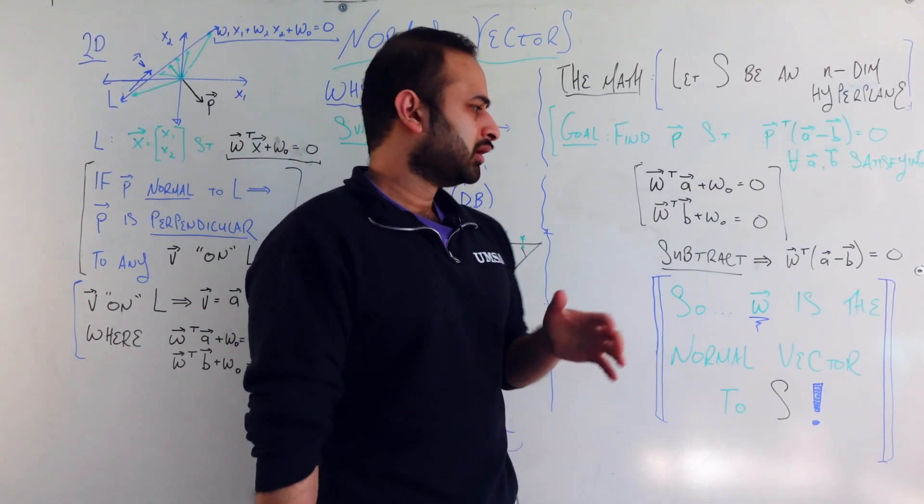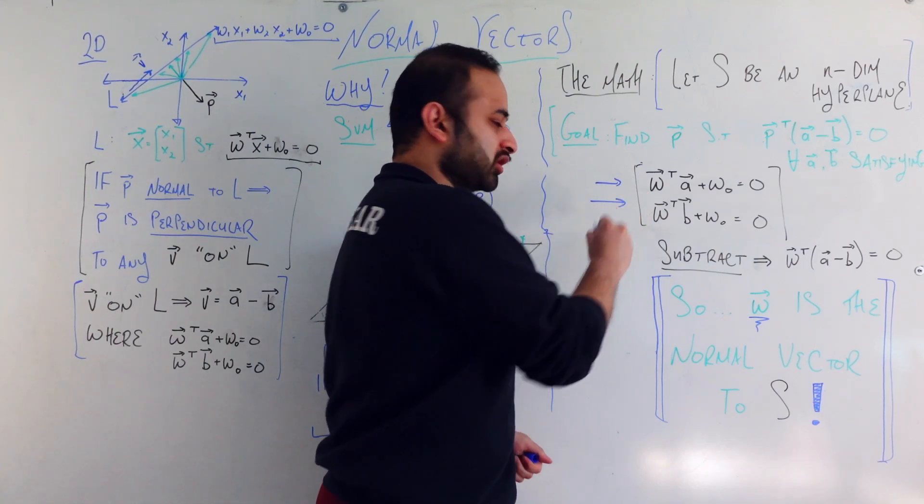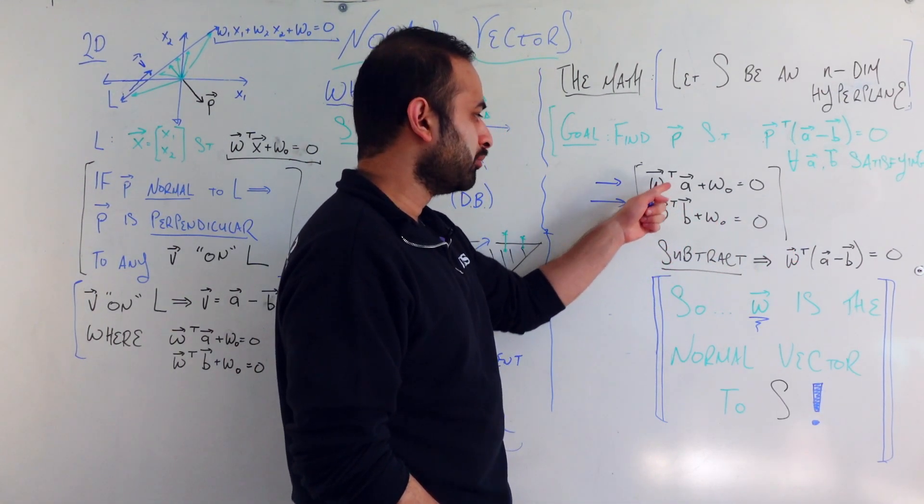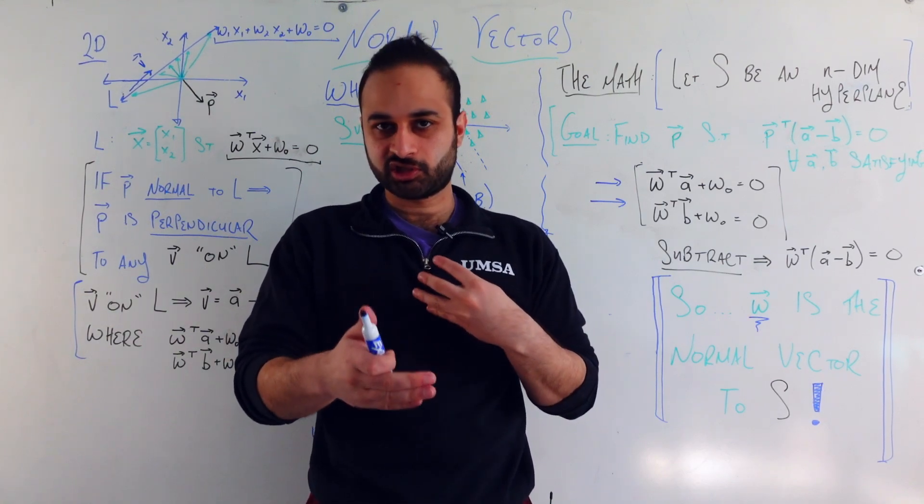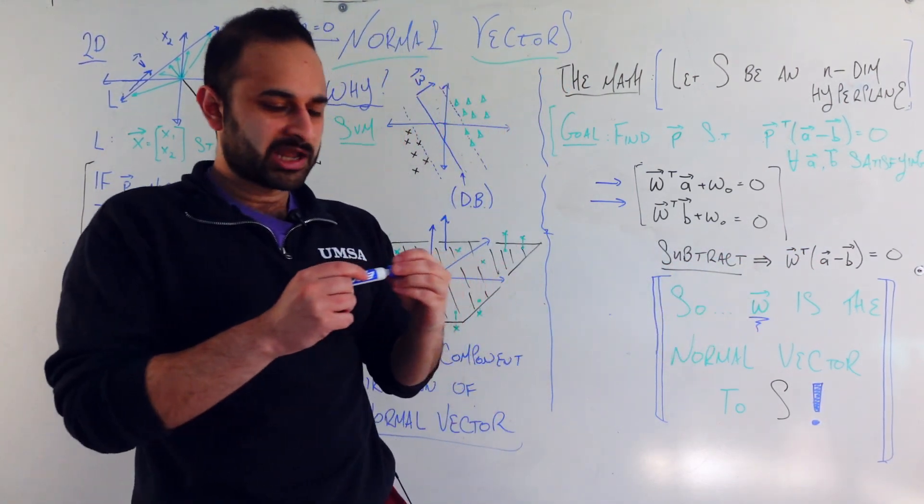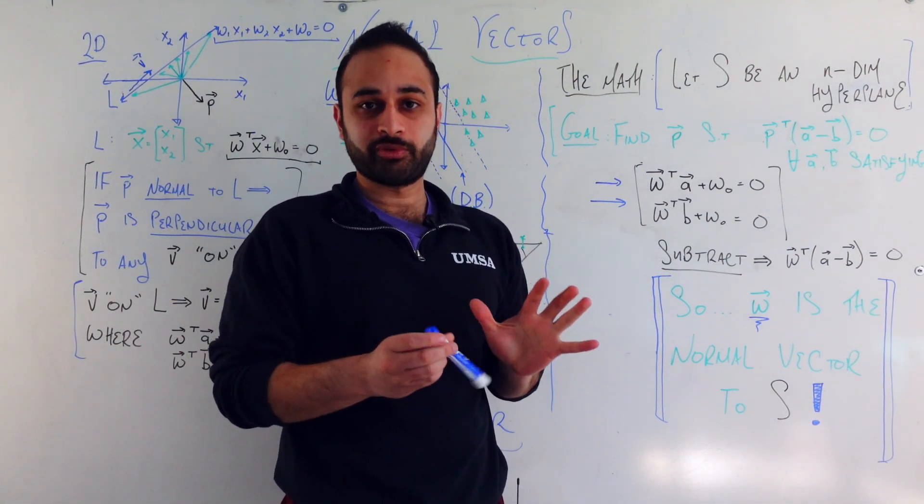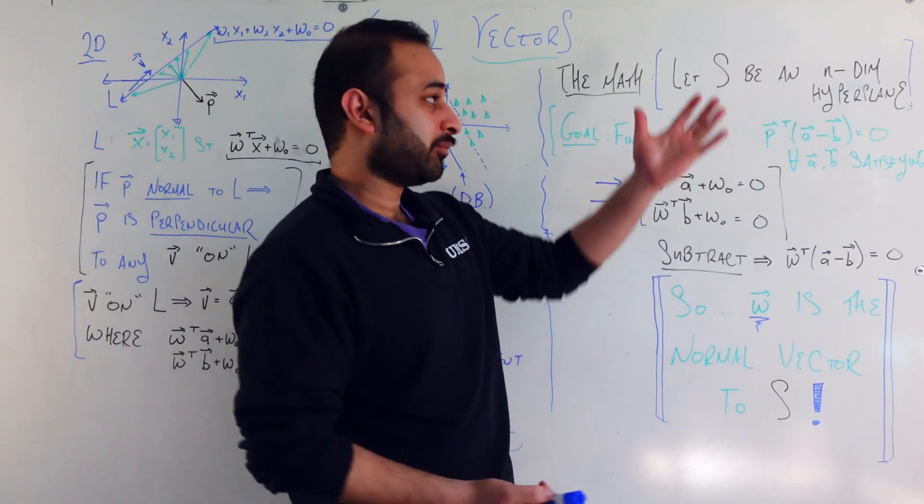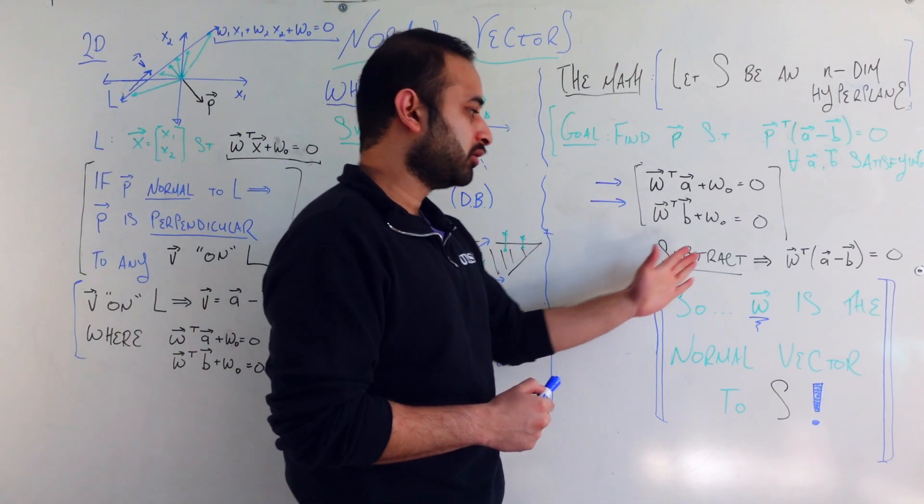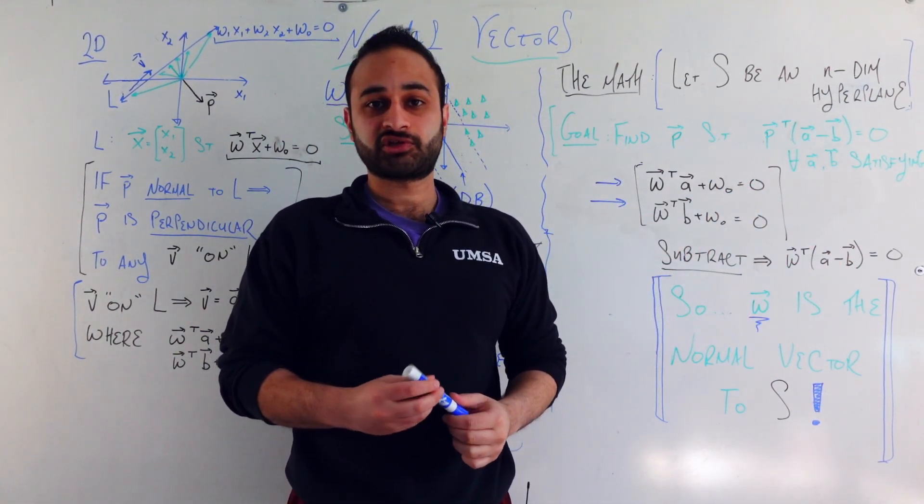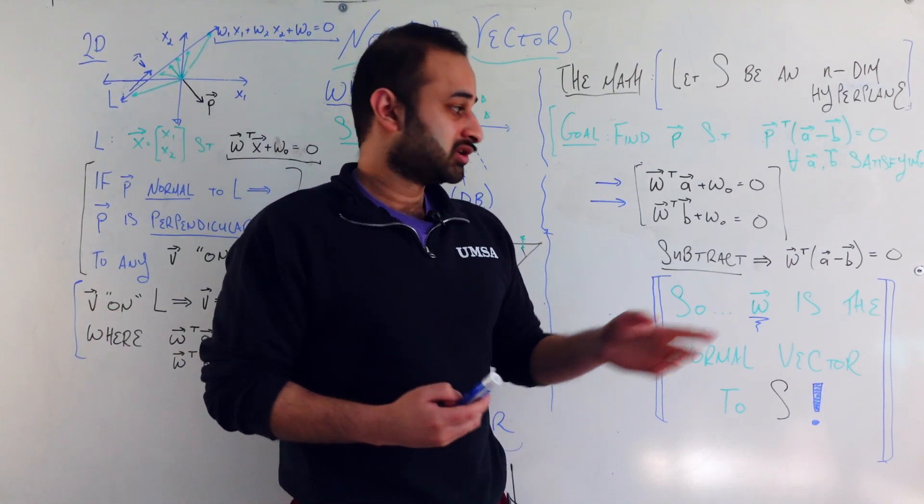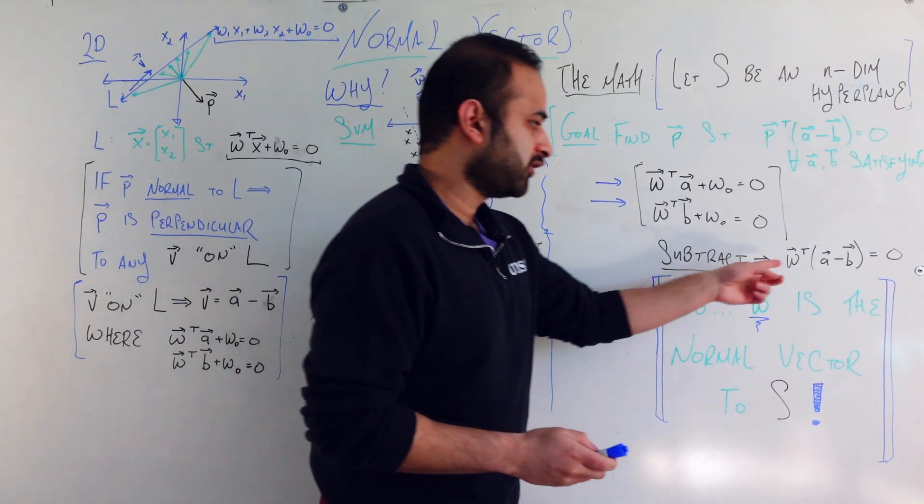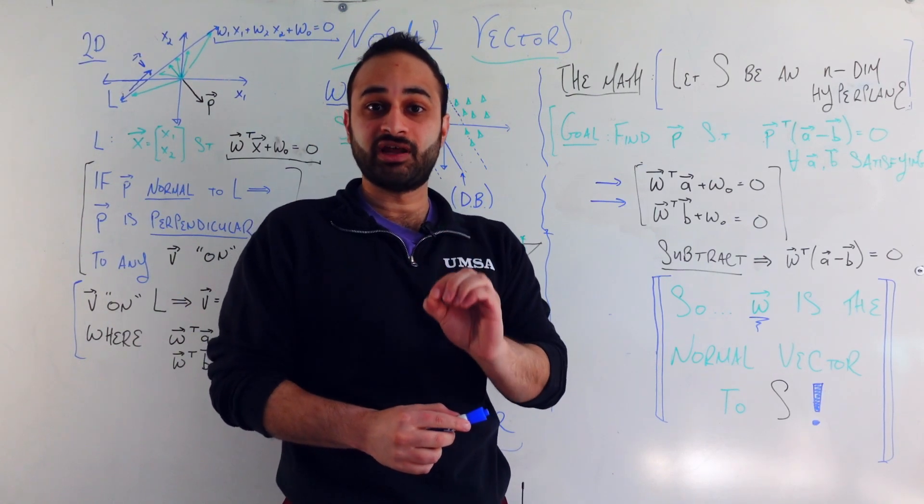Let's do a very natural thing. Let's subtract this equation from this equation, or the other way around. It doesn't really matter. So if we subtract these two equations, we're going to get W transpose A minus B, the W naughts just kind of cancel each other out, and that's equal to 0. Now, let me kind of phrase this in terms of intuition, what we've actually done. We said that if there's any two vectors A and B who satisfy the definition of the hyperplane S, then we know that W transpose of the difference between those two vectors is equal to 0. In other words, this vector W is actually perpendicular or normal or orthogonal to the difference between any two vectors who satisfy the definition of the hyperplane.